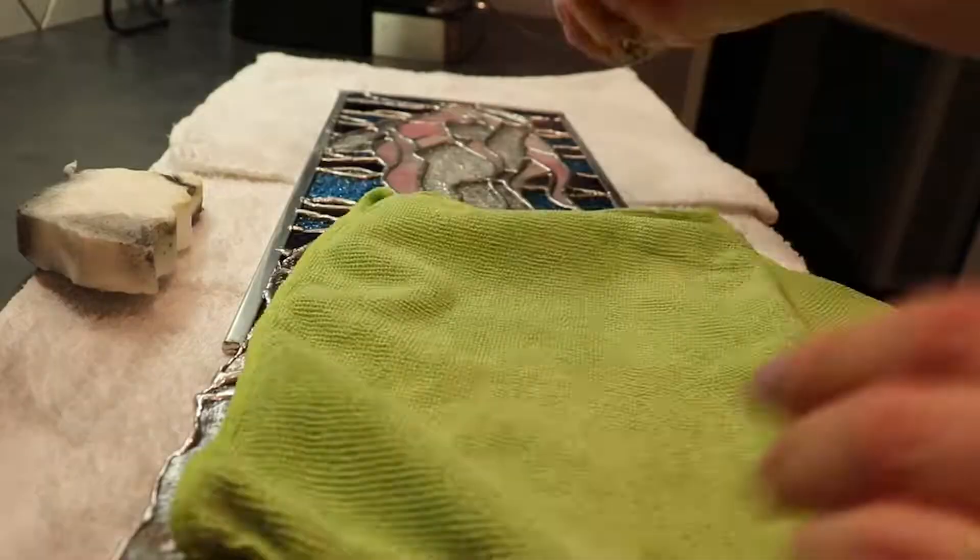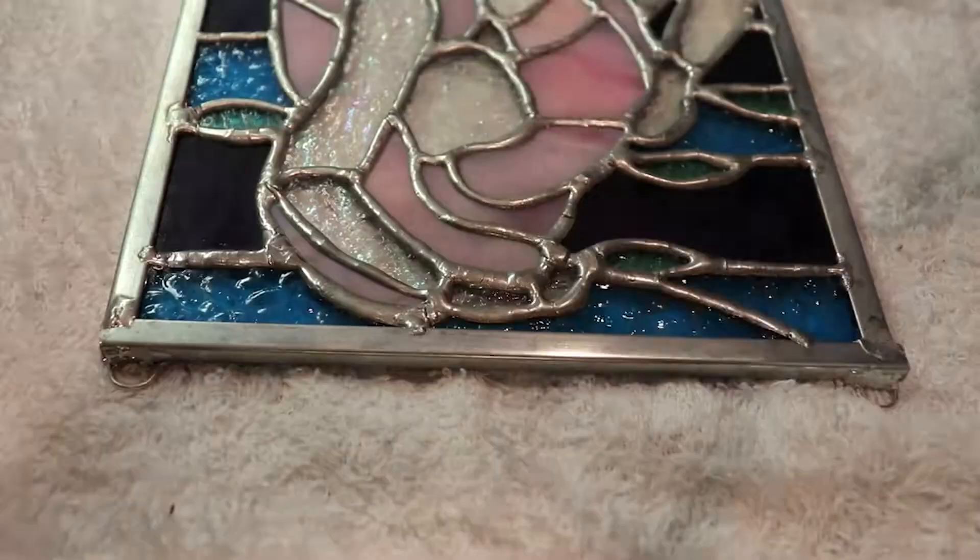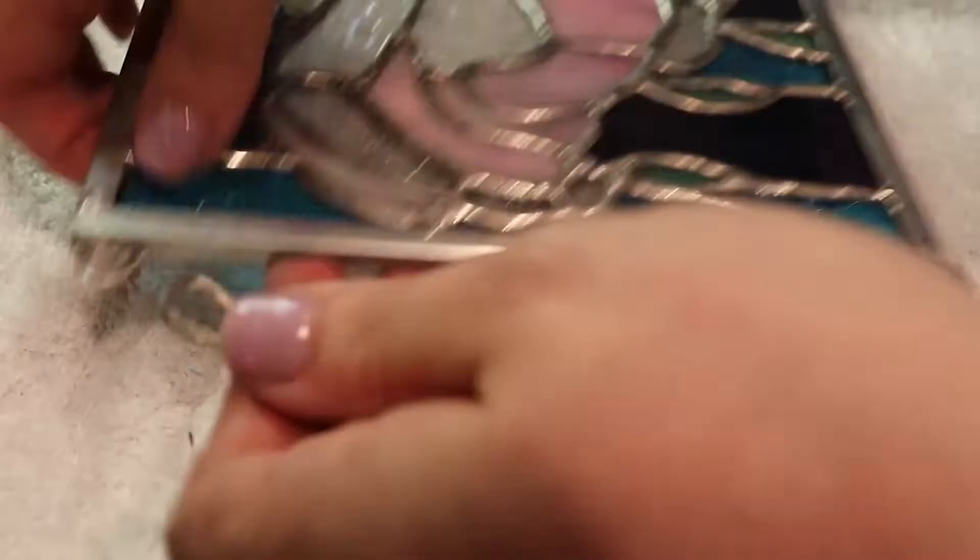Then after it's done, you're just going to want to give it a quick wash. I didn't have any quick ease. I think it's called it's a spray that neutralizes the flux and the patina that you use. I didn't have that. So I gave it a wash with baking soda and Dawn. I dried it and polished it.